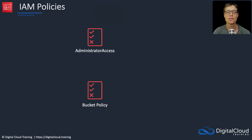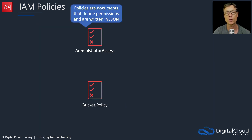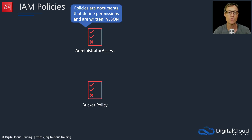Lastly, we have policies. Policies are how you apply permissions — you define permissions in a policy document written in JSON. There are two different types: an identity-based policy, applied to identities like users, groups, and roles; and a resource-based policy, applied directly to resources.